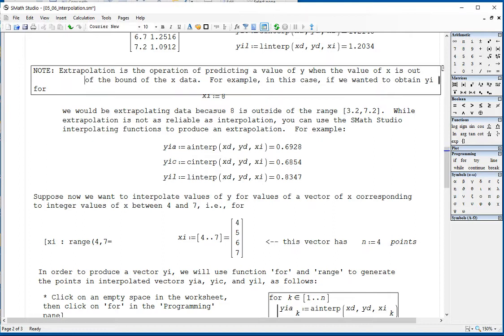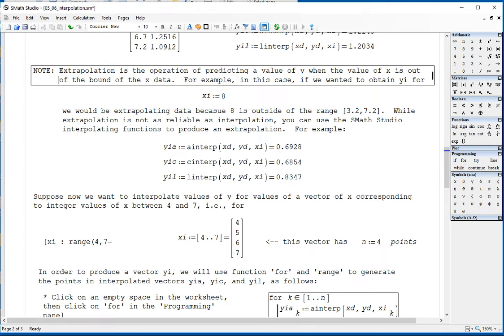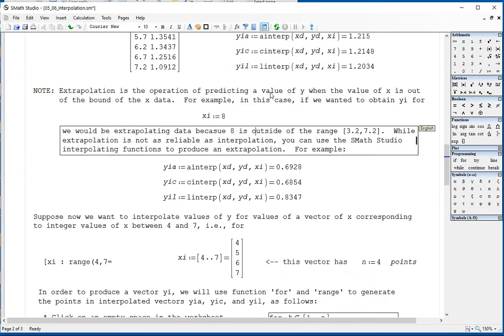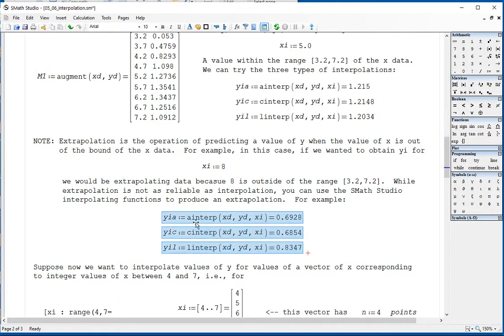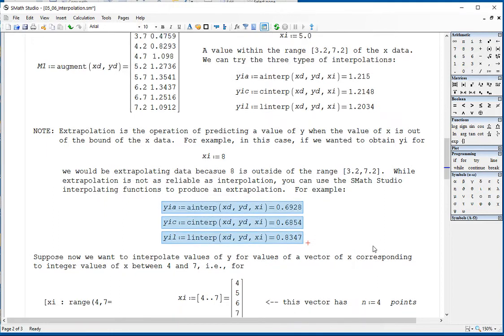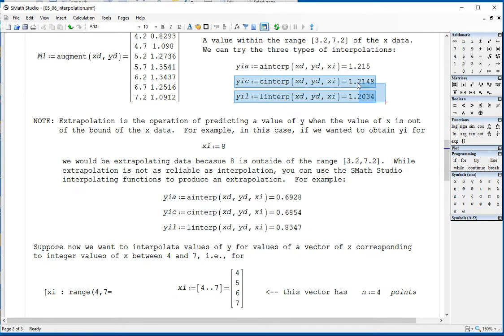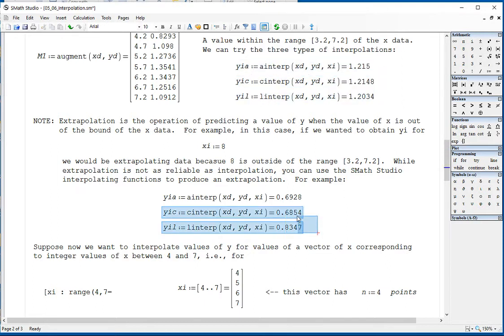This says extrapolation is the operation of predicting the value of x if is out of bounds for the x data. For example, in this case, xi equal 8 will be out of bounds because the largest value is 7.2. But you can still do the interpolating function, and it's going to give you some value. But the validity of that value is not as strong as the validity of the interpolation itself. This is called extrapolation.